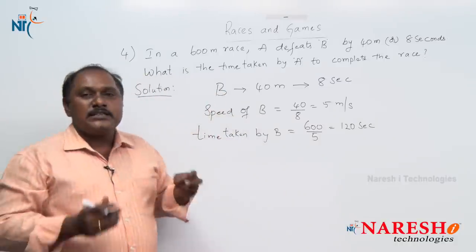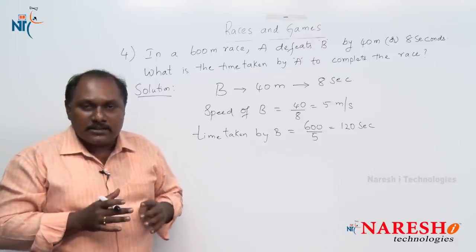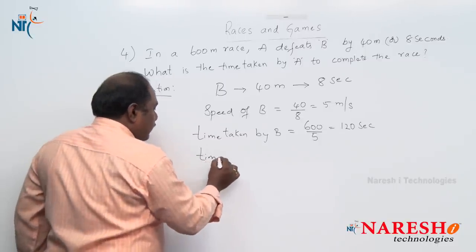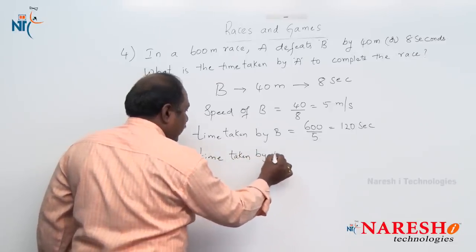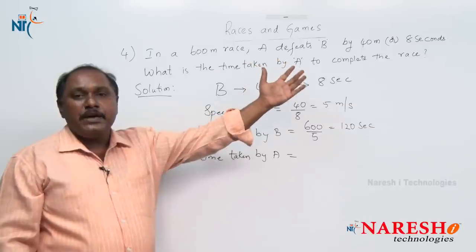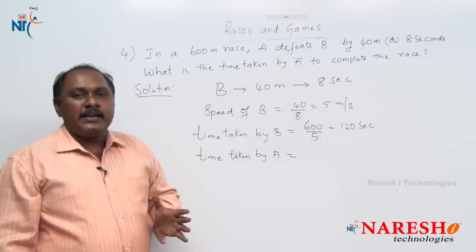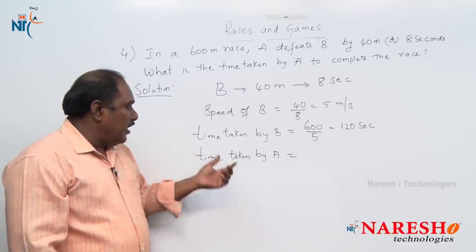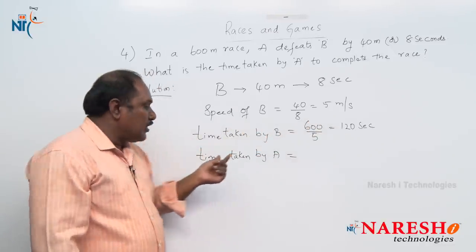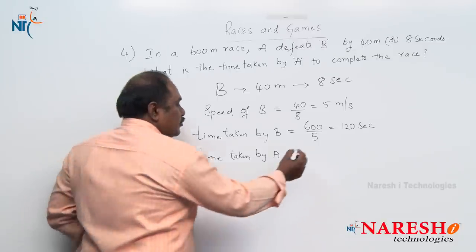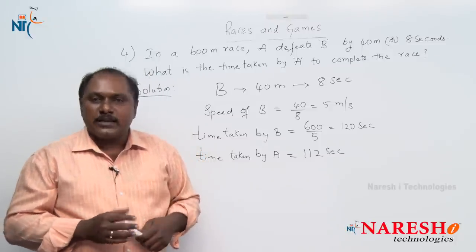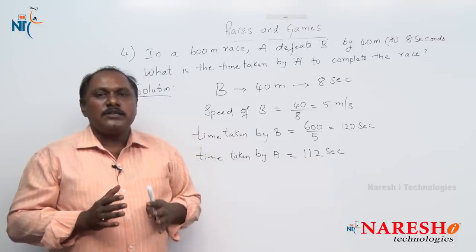120 seconds is the time taken by B to complete his race. Then what is the time taken by A to complete his race? In the given information, A defeats B by 8 seconds, so A should be taking 8 seconds less than B to complete his race. Time taken by B is 120 seconds, so time taken by A to complete his race is 112 seconds.